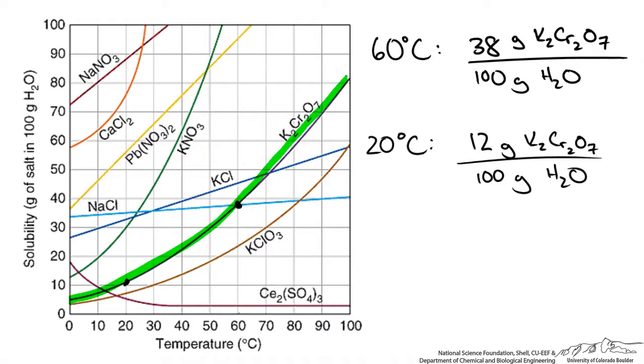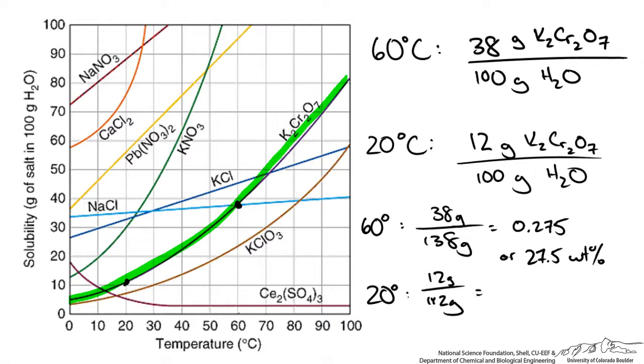So first thing to do is convert these to mass fractions. So if you recall, it is just the amount of solute over the total mass. So at 60 degrees, this is 38 grams over 138 grams, which is equal to 0.275 or 27.5 weight percent, and at 20 degrees, we have 12 grams over 112 grams, which is equivalent to 0.107 or 10.7 weight percent.